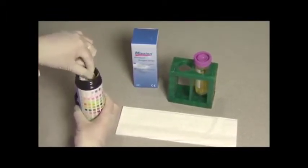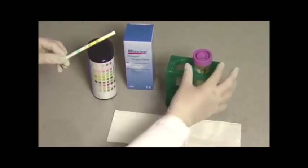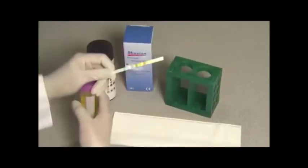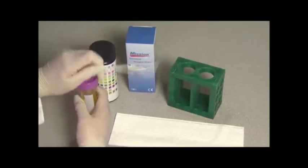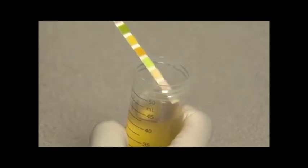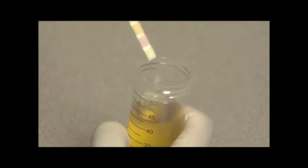The operator has three seconds before the triple beep sounds to immerse the strip into the urine. Immerse the reagent areas of the strip into the specimen for one to two seconds after hearing the beep, then run the edge of the strip against the edge of the urine container to remove excess urine.